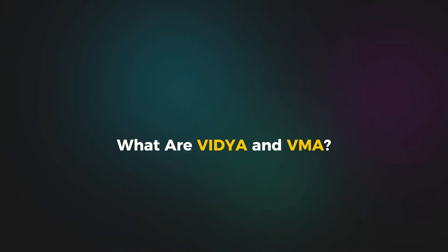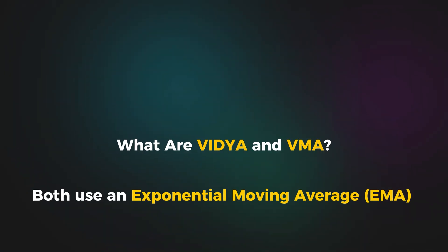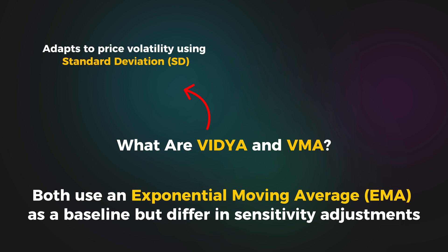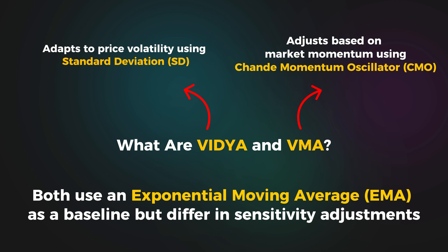Variable Index Dynamic Average and Variable Moving Average are similar in that they both start with an exponential moving average. Where they differ is in how they adapt. VIDYA adjusts with volatility using standard deviation, while VMA reacts to momentum using the Chande Momentum Oscillator.